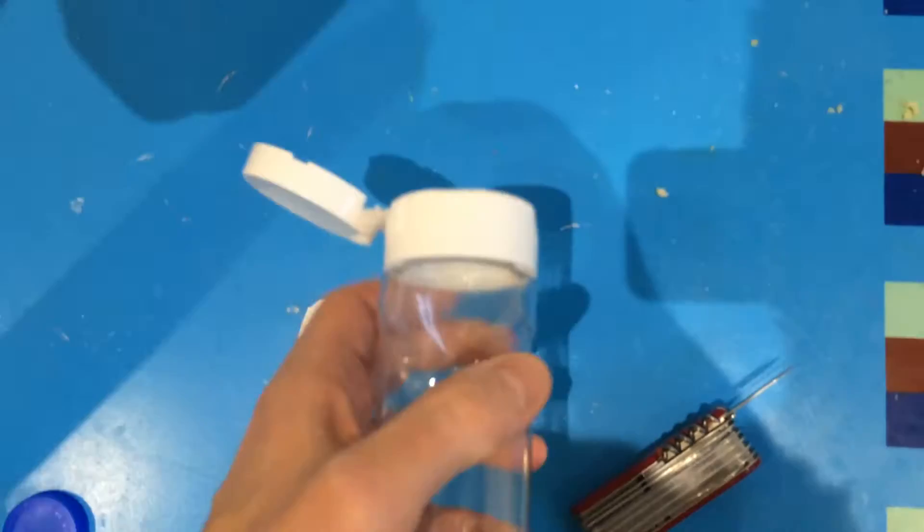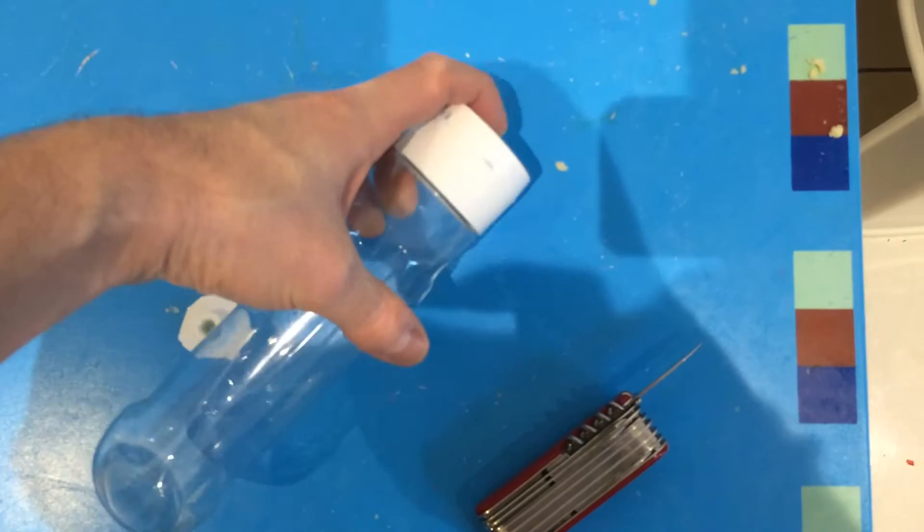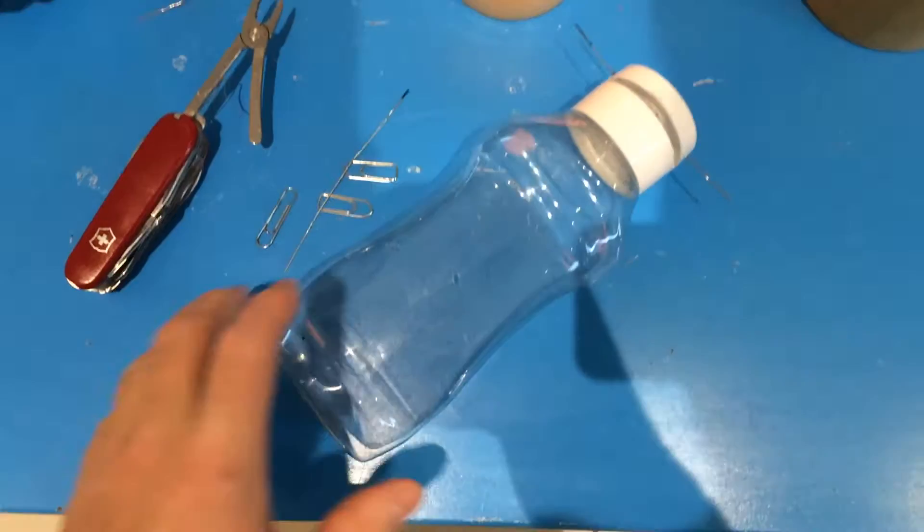The mouse could walk into the bottle. So what's missing now is the mechanism that the bottle actually closes when the mouse goes in. That's the second step.